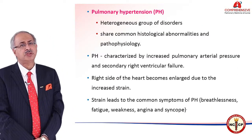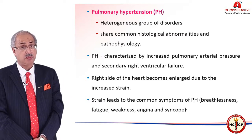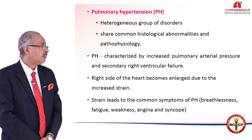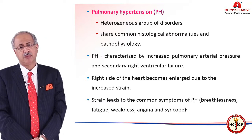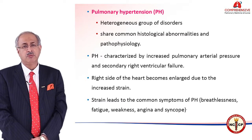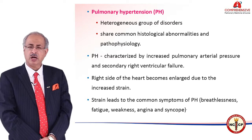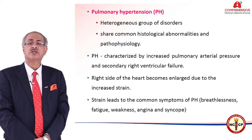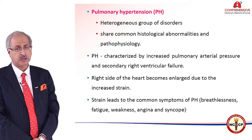When we talk in terms of pulmonary hypertension, it means the blood pressure in the pulmonary circulation has gone up. It is a heterogeneous group of disorders, but with common histological abnormalities and the same pathophysiology. In simple words, the factors which lead to pulmonary hypertension are numerous — the disease etiology is heterogeneous.